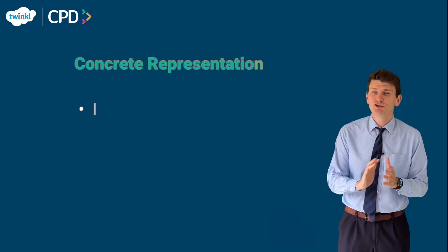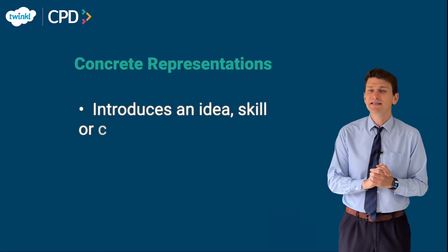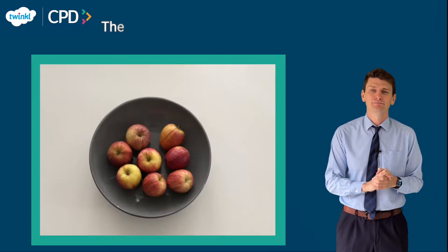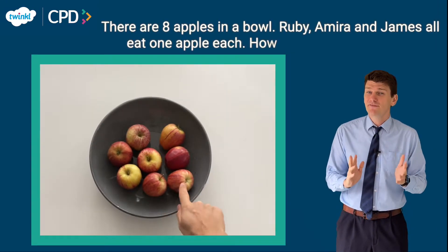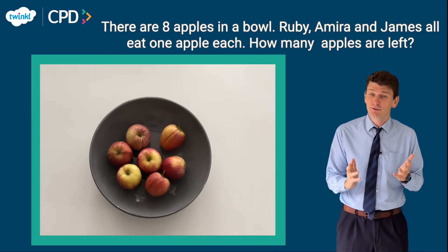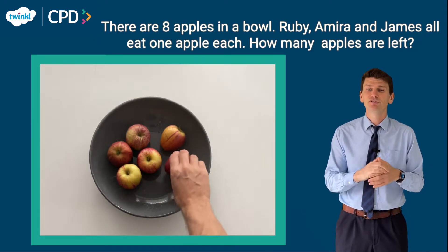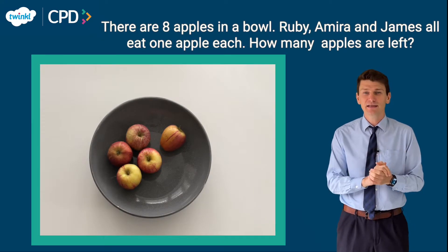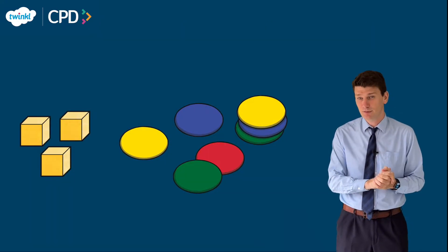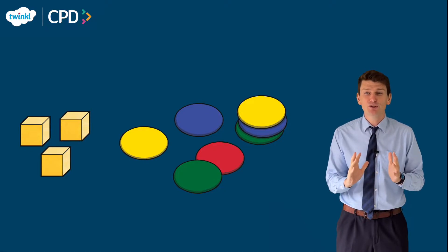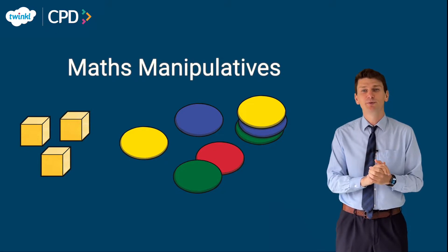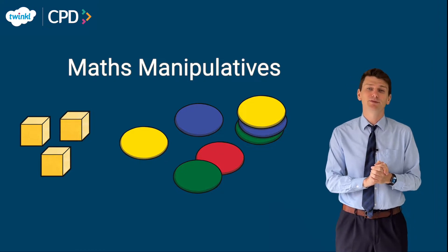The concrete stage introduces children to an idea, skill or concept by using real-life examples. For example, if a problem talks about apples then try and use real apples when exploring the problem. Children can then begin to use other physical objects such as cubes or counters to represent the apples. These objects are often referred to as maths manipulatives and are a great way for pupils to investigate different concepts.